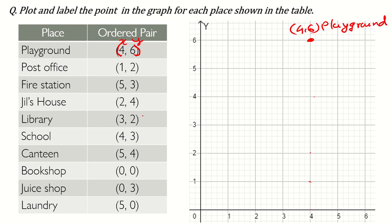Post office where? 1, 2. So X is 1 here and Y is 2 here. So this is 1, 2 and this is post office. Fire station where? 5, 3. So 5 here, 3 is here. So this is fire station. Next is Jill's house where? 2 and 4. Here. This is 2, 4 and Jill's house.